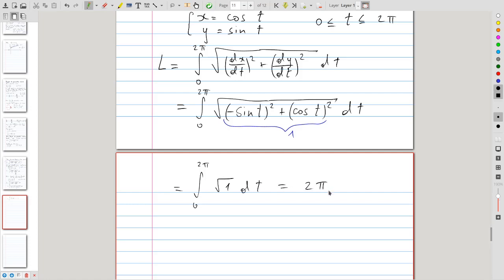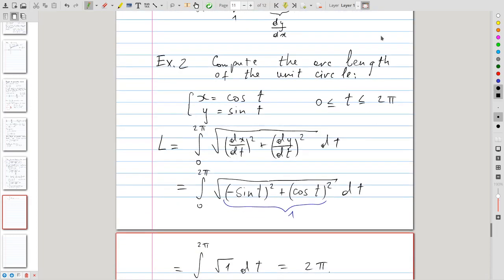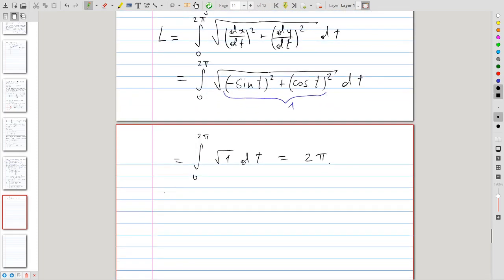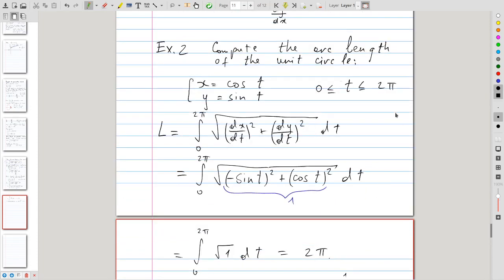And, so, naturally, we got the correct answer here, because the arc length for the unit circle is indeed 2π. So, this is the circumference, and it is equal to 2πr, and since r is 1, we get precisely 2π. So, it's easy to check that we obtained the correct answer here.